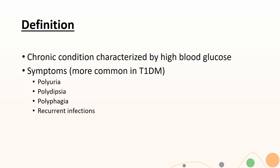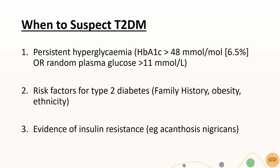These symptoms are more common in type 1 than type 2 diabetes. You should suspect type 2 diabetes when there is persistent hyperglycemia, which means HbA1c of more than 48 mmol per mole or 6.5%, or random plasma glucose of more than 11 mmol per litre.